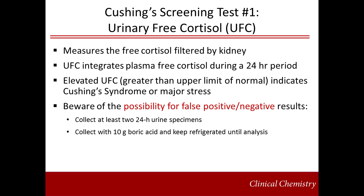Urinary free cortisol, or UFC, has been used for the diagnosis of Cushing's for over 40 years. Since the kidneys filter free cortisol into the urine, a 24-hour urine collection will reflect the total amount of free cortisol in circulation for a 24-hour period. Thus, elevated UFC indicates Cushing's or another state of stress, such as major illness or trauma, which physiologically elevates cortisol.